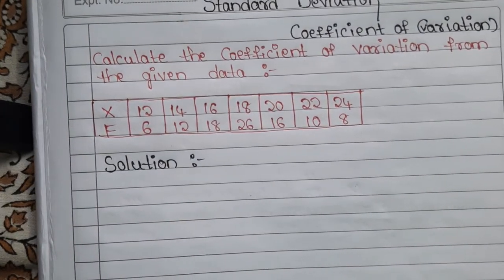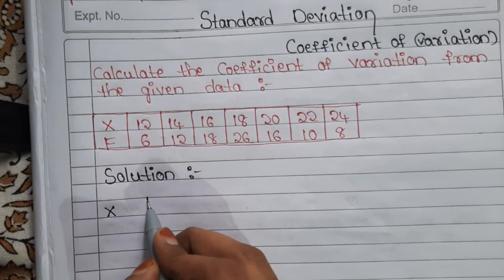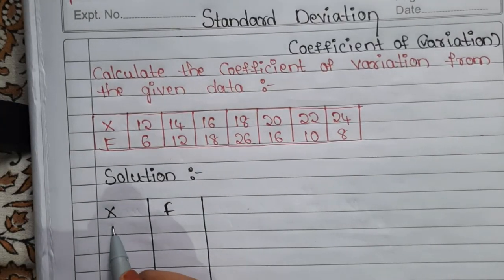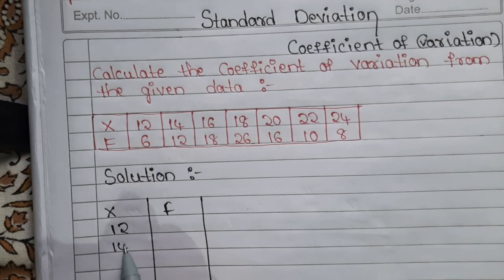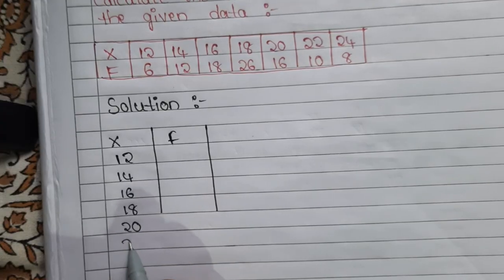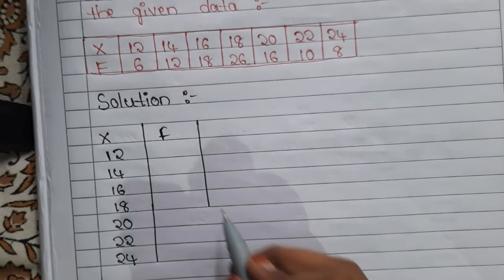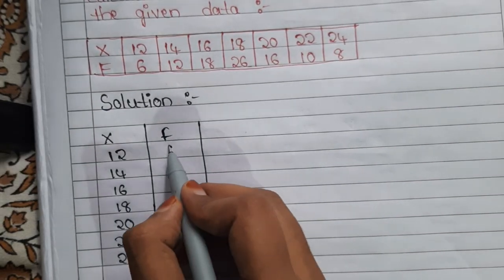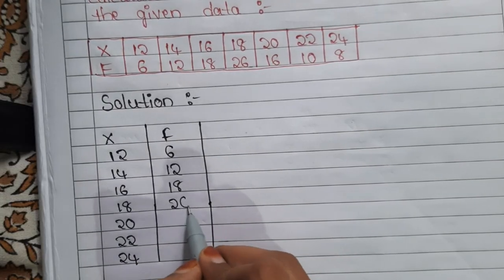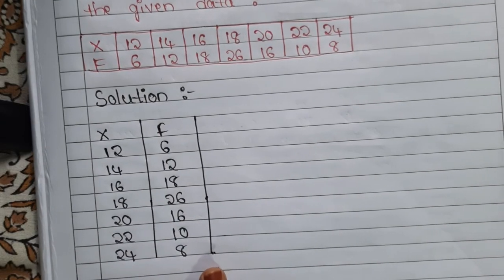Now for the solution — whatever is given in the question, take it as-is. Take the x column and the f column. The x values are: 12, 14, 16, 18, 20, 22, 24. The f values are: 6, 12, 18, 26, 16, 10, 8. We are done with x and f.